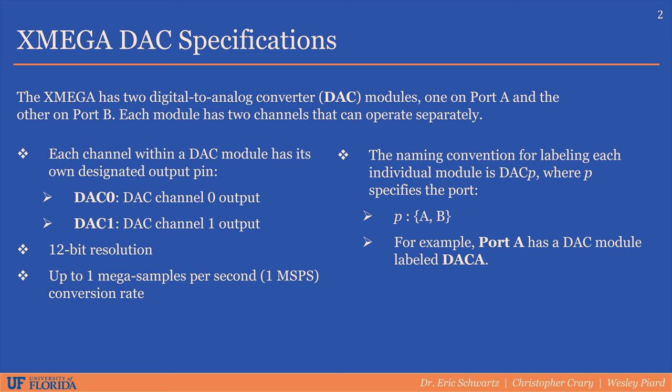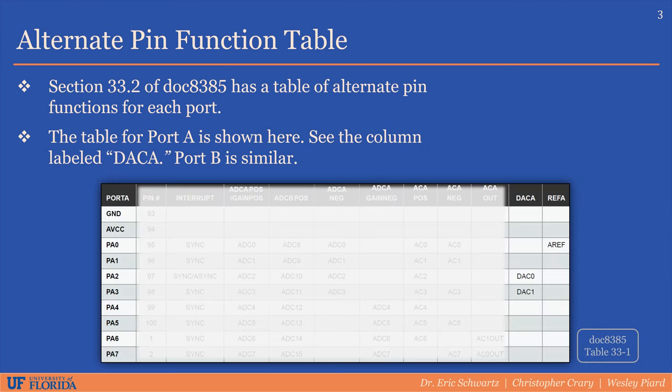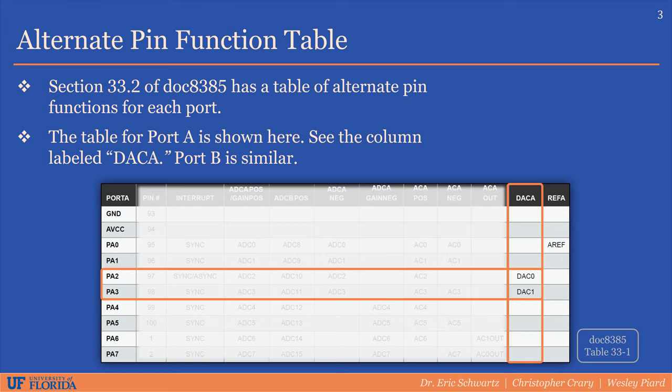The naming convention is DACA for port A and DACB for the DAC module on port B. An alternate pin function table shows which pins DAC0 and DAC1 correspond to on port A — DAC0 corresponds to pin A2 and DAC1 corresponds to pin A3. Also make note of the Aref pin in the far right column; similar to the ADC, this is the voltage reference that the DAC will use.